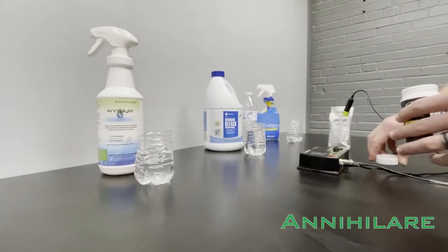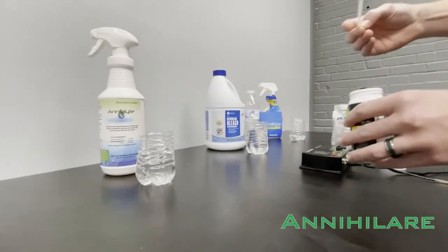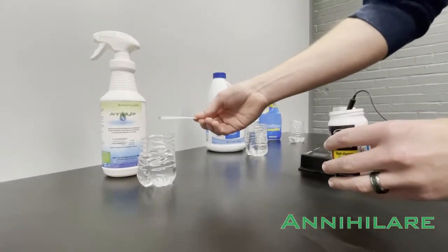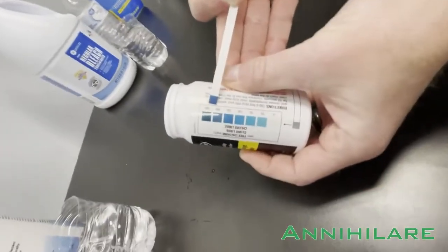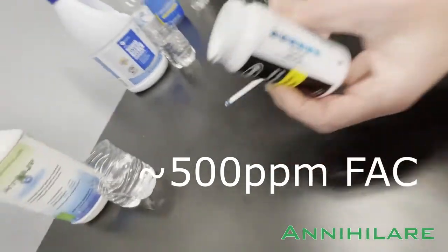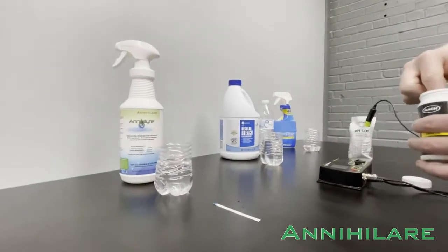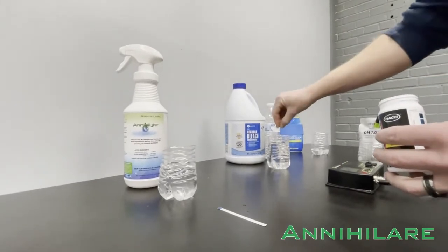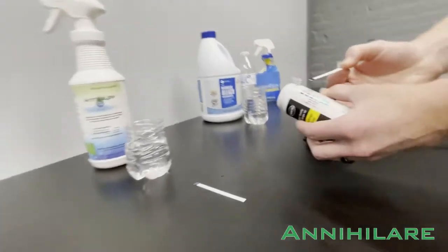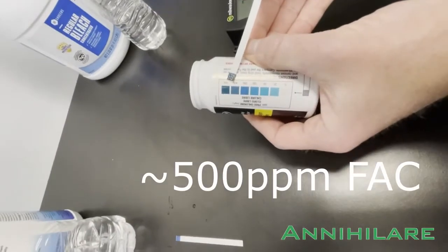So I'm going to start with the hypochlorous acid solution. If you can see here compared to the color, it's around five or six hundred parts per million, nice blue color. And I'm going to do that with the sodium hypochlorite diluted solution here. You can see we're roughly the same parts per million.